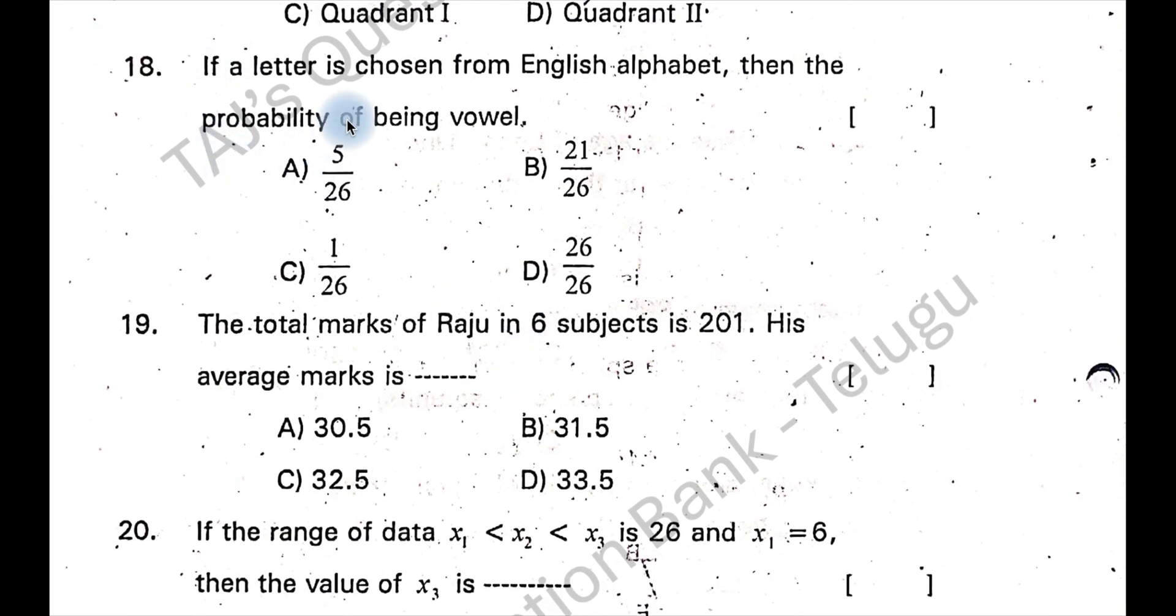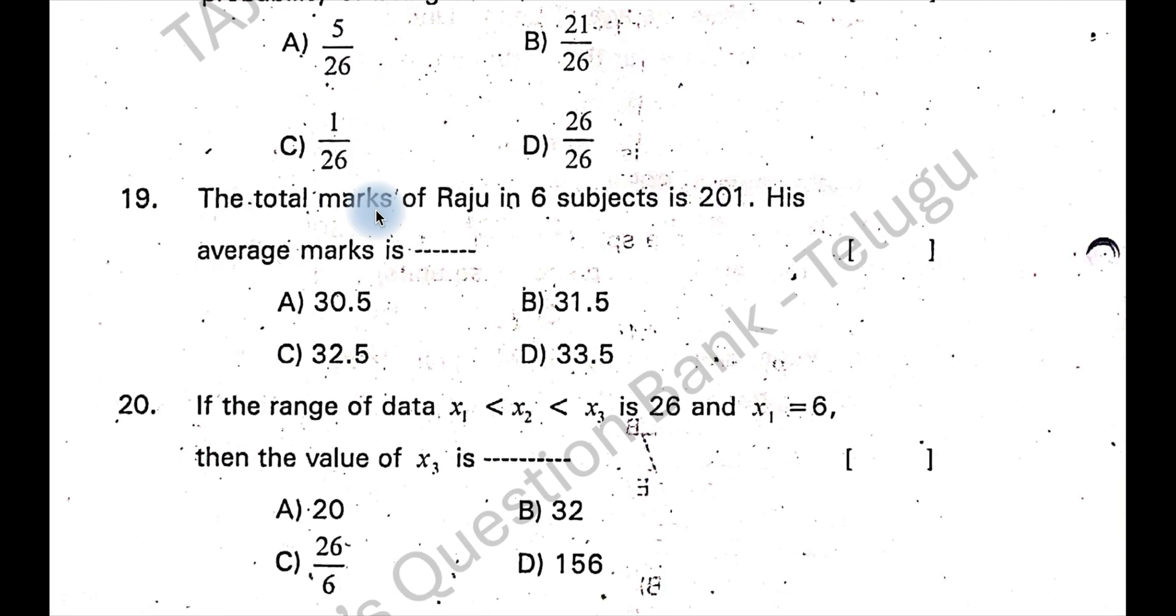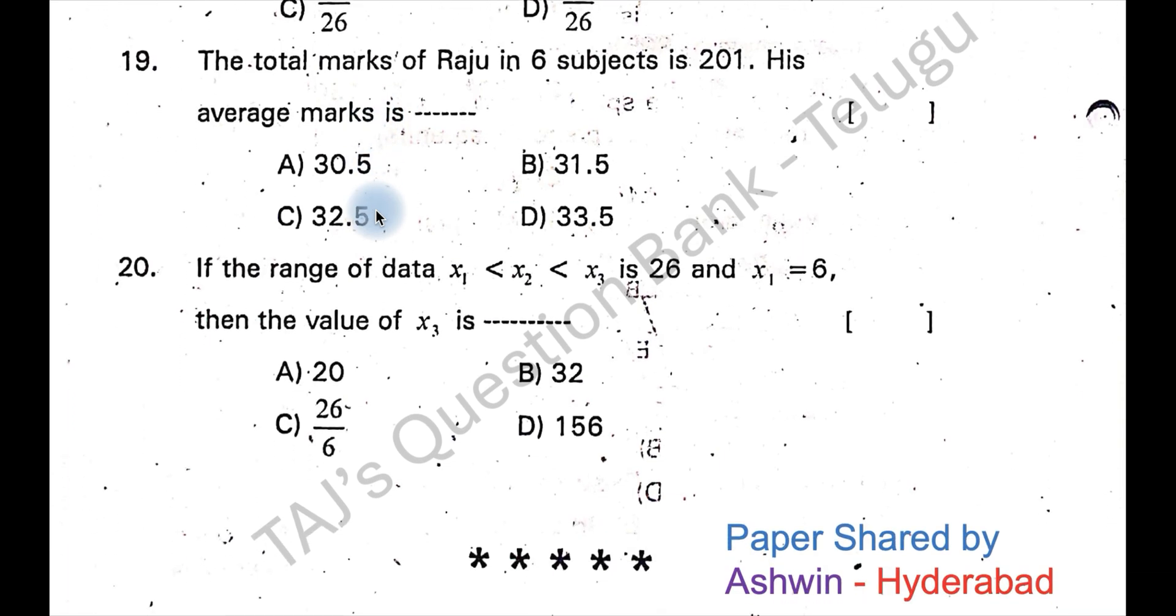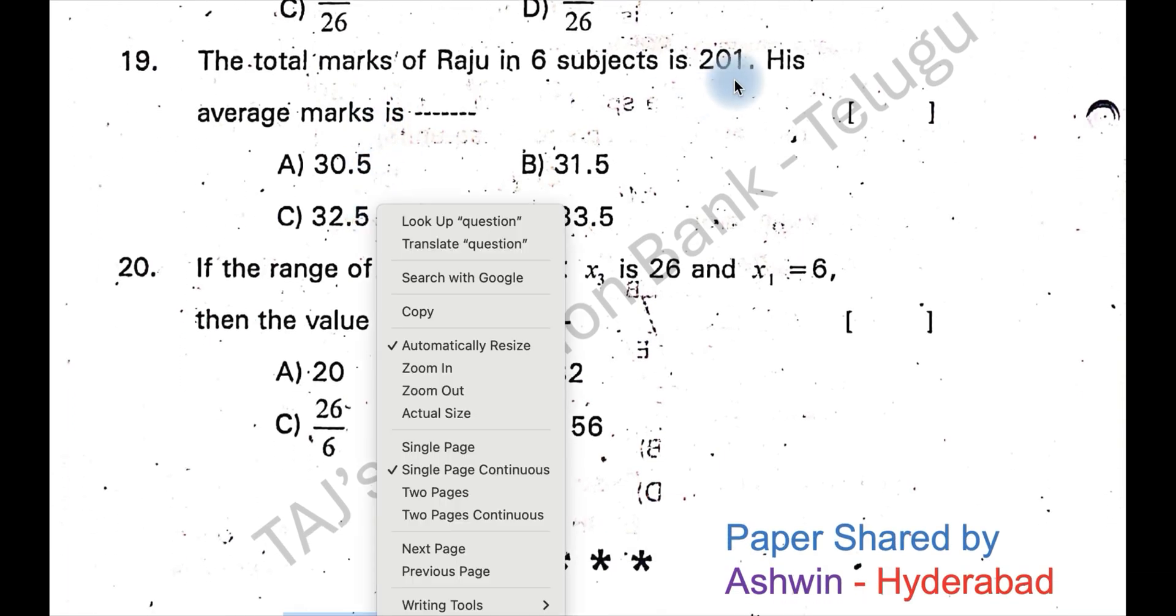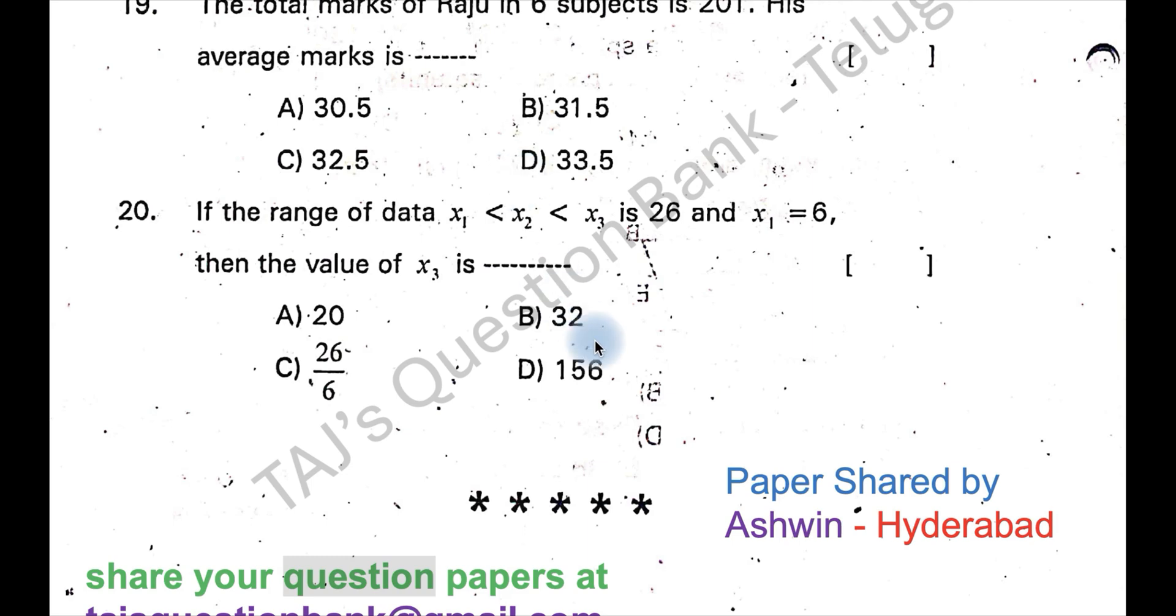For 18 the answer is option E. For question 19, the total marks of Raju in 6 subjects is 201. His average marks is 201 divided by 6, how much? It will be option D, 33.5.